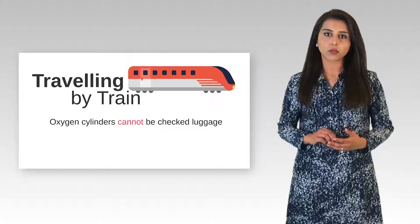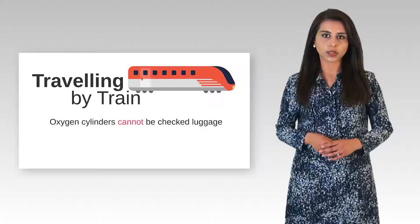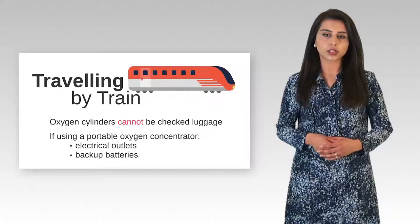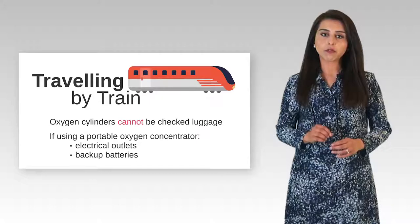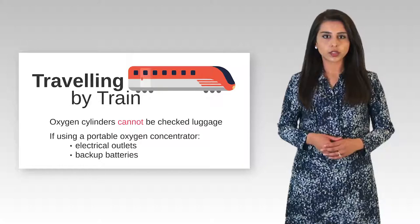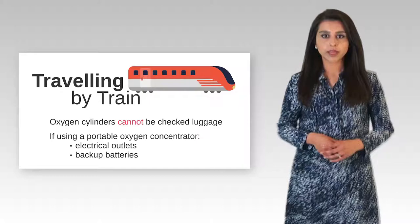With liquid oxygen, make sure to bring your own equipment and to store the system in an upright and secure way. If you are using a portable oxygen concentrator on a train, there are a few considerations that you need to keep in mind. You need to bring your own equipment and also have enough battery for a minimum of four hours in case there is a power outage on the train. Also, make sure the train has electrical outlets for you to use to plug in your portable oxygen concentrator.